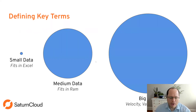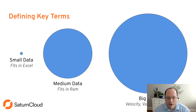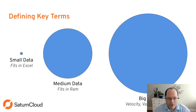The first thing we're going to do is define some key terms, starting with what I mean by small, medium, and big data. Small data is anything that fits in Excel — so less than one million rows. You could disagree with any of these definitions, but this is what we'll use for the purposes of this presentation.